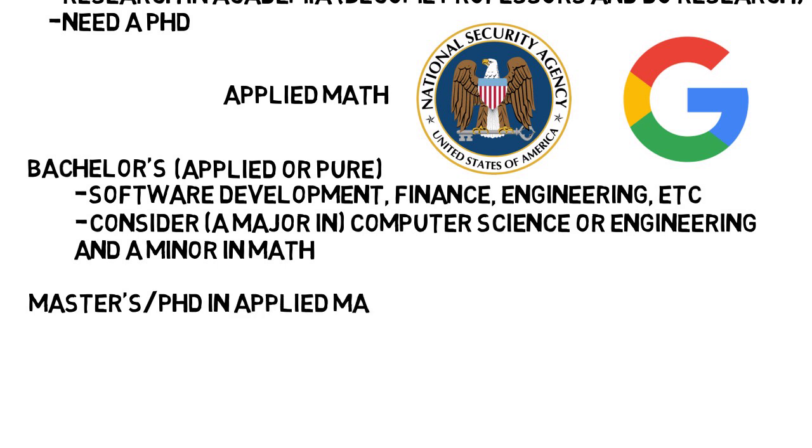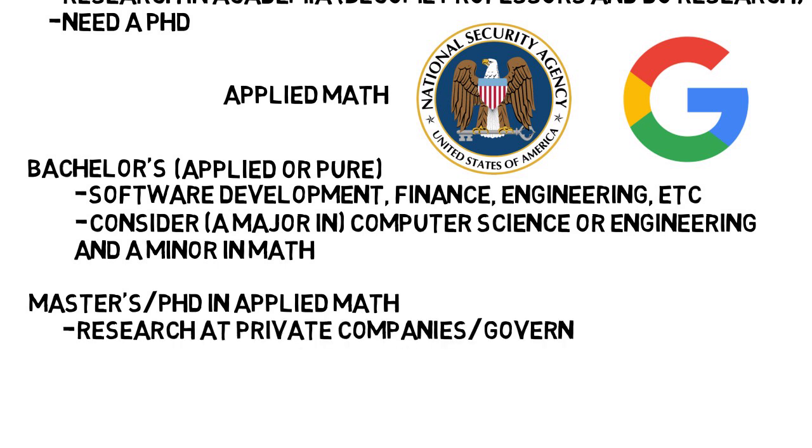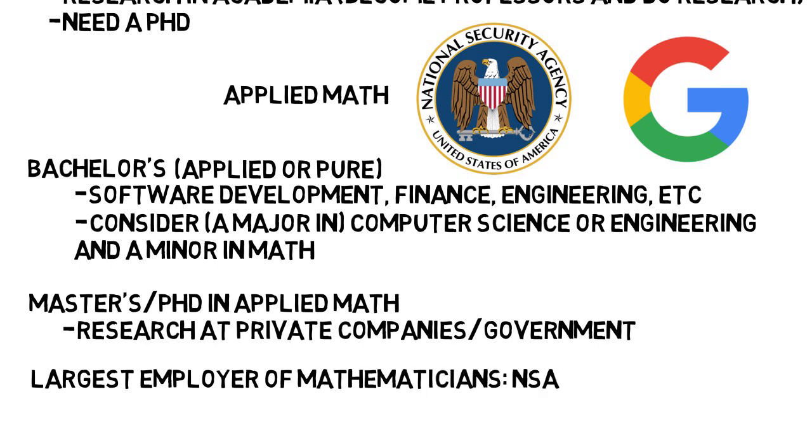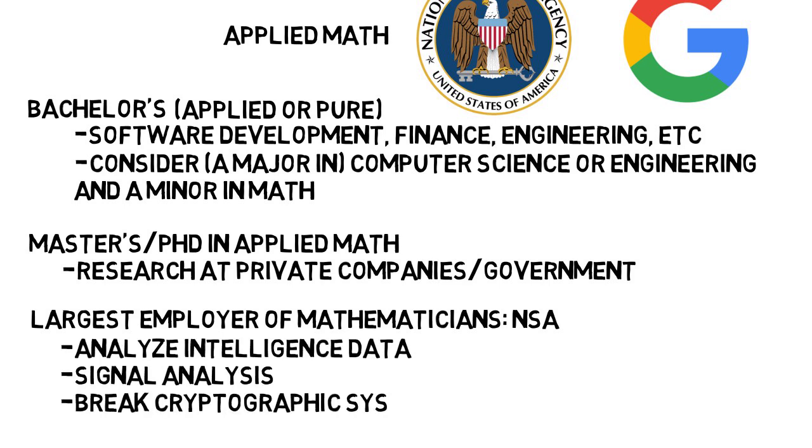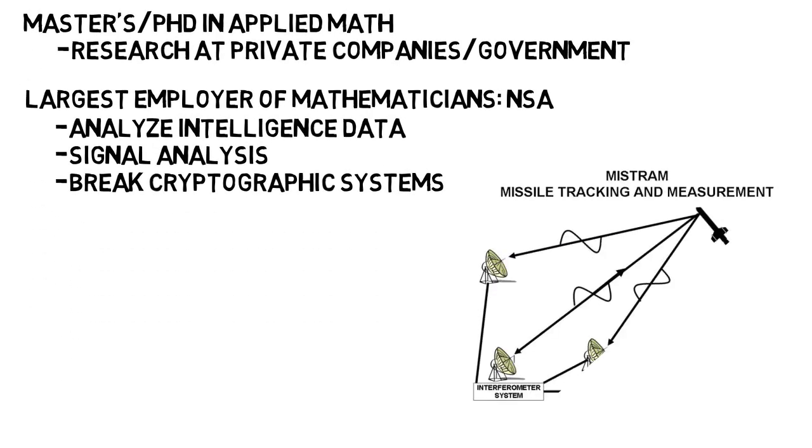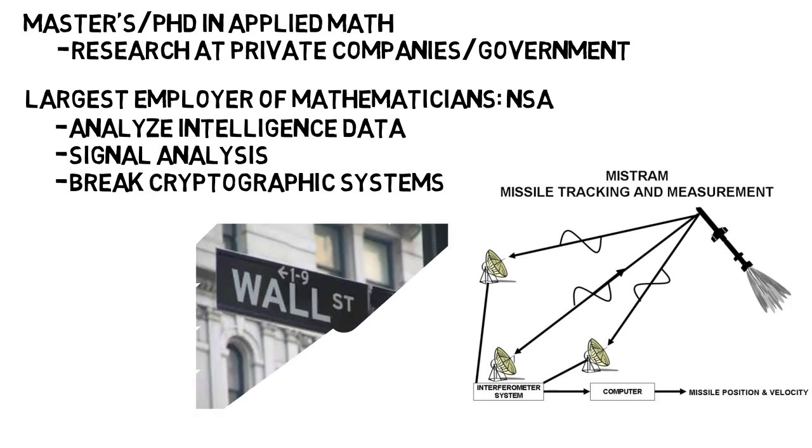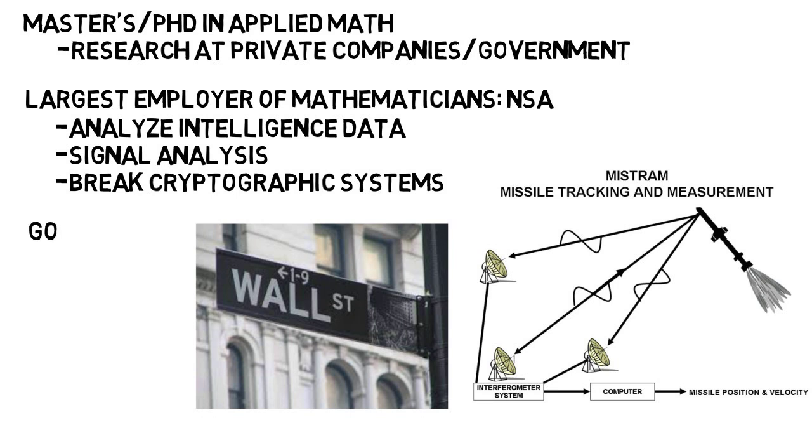With a master's or PhD in applied math, then you could work in academia and research, but you could also do research at private companies or the government. The largest employer of mathematicians, at least in the US, is actually the NSA or National Security Agency. Mathematicians here work in order to analyze intelligence data, do signal analysis, break cryptographic systems, and more. Defense companies can hire mathematicians for things such as missile guidance algorithms, and like I said, finance companies need mathematicians for lots of data analysis. Then companies like Google, IBM, or Microsoft have research divisions which can hire mathematicians as well. Although research positions often require a PhD, and these jobs aren't quite as abundant as being a software developer for Google, let's say.